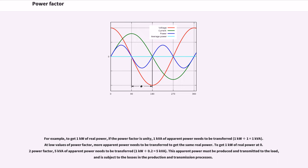For example, to get 1 kW of real power, if the power factor is unity, 1 kW of apparent power needs to be transferred. At low values of power factor, more apparent power needs to be transferred to get the same real power. To get 1 kW of real power at 0.2 power factor, 5 kW of apparent power needs to be transferred. This apparent power must be produced and transmitted to the load, and is subject to the losses in the production and transmission processes.